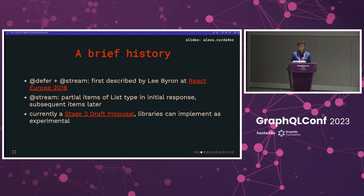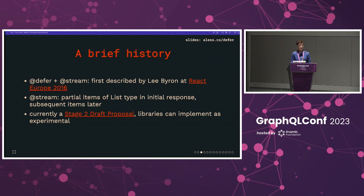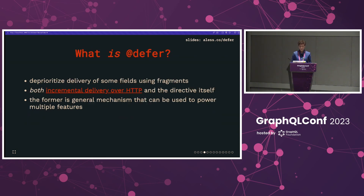A very brief history of defer. Defer and stream were first described at React Europe 2016 by Lee Byron. You'll often hear those two directives in the same sentence because they're the subject of a single proposal. We won't be talking about stream much today — it's a way of allowing your server to deliver partial items for a list type in an initial response, with subsequent items streaming in later. Both directives are part of a single draft proposal that has reached stage two within the last year, signaling that libraries should implement support as experimental functionality. It's also the final stage before the proposal is ratified in the GraphQL spec, so it's a significant milestone.